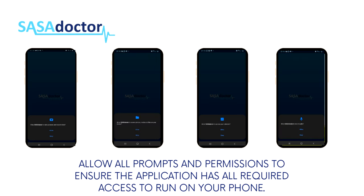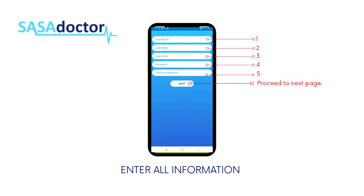Allow all prompts and permissions to ensure the application has the required access to run on your phone. Enter all information, including first and last name, and username — which we prefer you use your mobile number, as this can only be registered to a specific person. Enter and confirm your password and hit the next button.